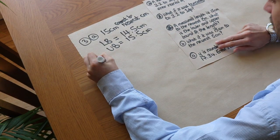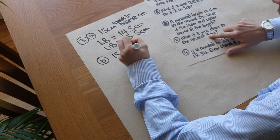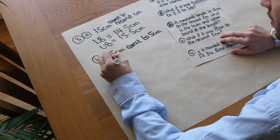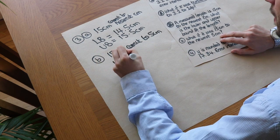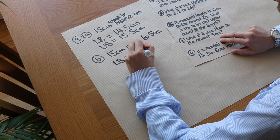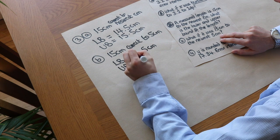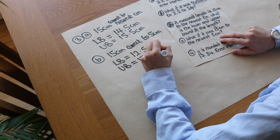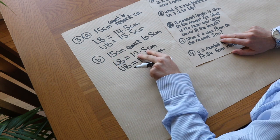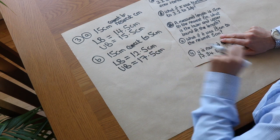For the second part, the length is now correct to the nearest 5 centimetres, so the trick doesn't work here. We subtract and add half the accuracy: half of 5 is 2.5. So the lower bound is 15 minus 2.5, which is 12.5, and the upper bound is 15 plus 2.5, which is 17.5. Checking: 12.5 to the nearest 5 is 15, and 12.4 to the nearest 5 would be 10 — so 12.5 is correct.